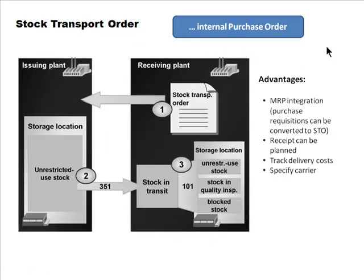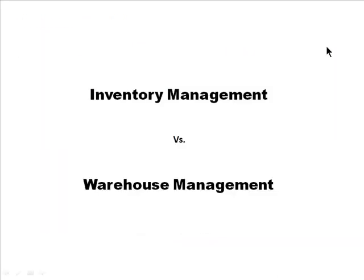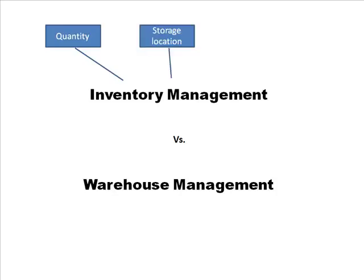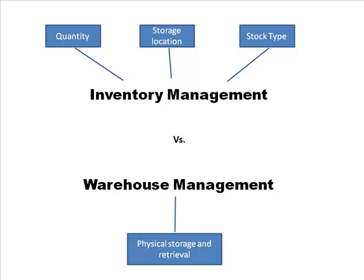Now we move to warehouse management. We've covered inventory management and are jumping to warehouse management, which is related but different. Inventory management is about quantity — where is it and what type of stock do you have. Warehouse management is concerned with physical storage and retrieval: the logistics of physically storing and retrieving goods, including exactly where items are within a storage location.